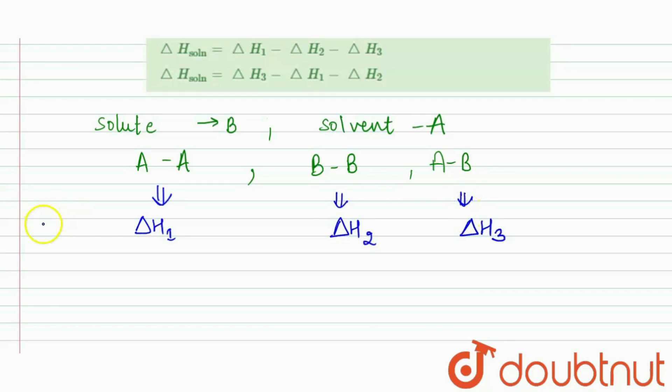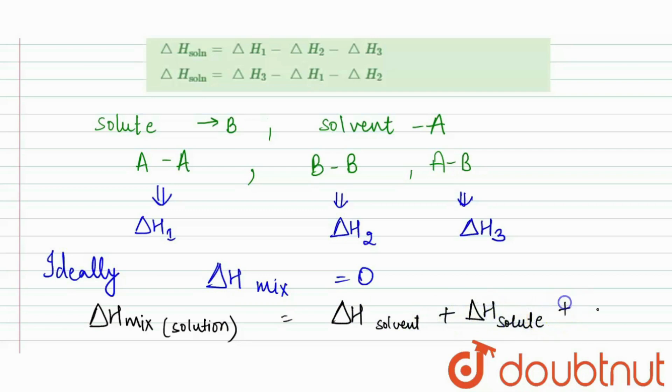So we know that ideally for the solution, delta H mixing is equal to zero. And when it is possible, delta H mixing, or we can say solution, is equal to delta H solvent plus delta H solute plus delta H solute to solvent.